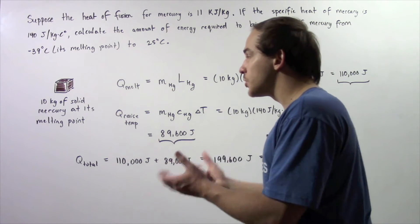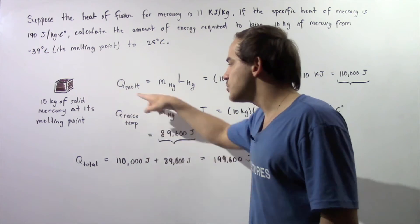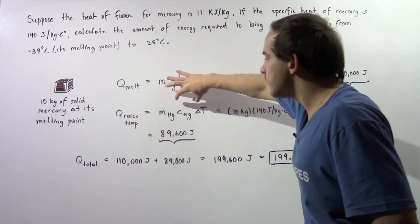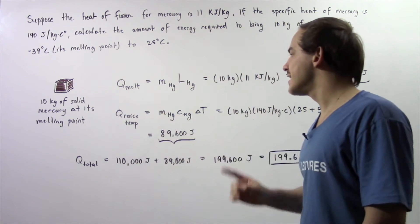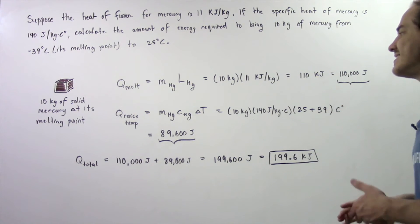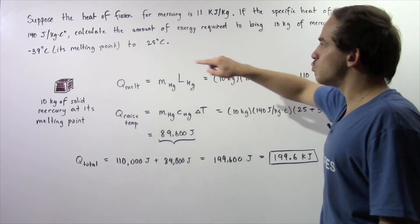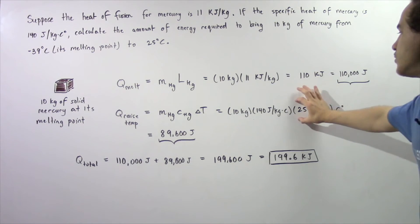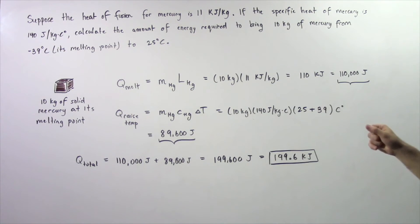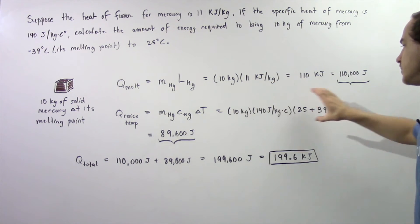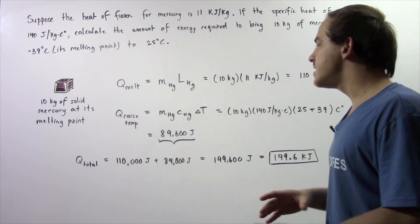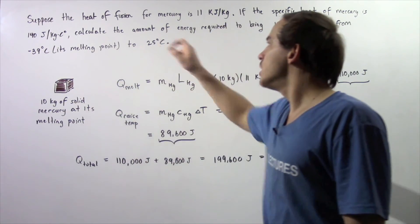Now we have liquid mercury and we want to find how much energy is required to raise the temperature from negative 39 degrees Celsius to 25 degrees Celsius. We use Q = m × c × ΔT: mass is 10 kilograms, specific heat is 140 joules per kilogram times Celsius, and the change in temperature is 25 minus negative 39, which equals 64 degrees Celsius. Multiplying these quantities gives 89,600 joules.